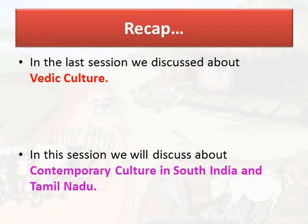Before going into details of today's session, let us have a recap of what we learned in the last one. In the last session we discussed about the Vedic culture. The phase of urbanization in India came to an end with the decline of the Indus civilization, and a new era called the Vedic Age began with the arrival of the Aryans. The Aryans were Indo-Aryan language-speaking semi-nomadic pastoralists who came from central Asia through the Khyber Pass of the Hindu Kush mountains. Cattle rearing was their main occupation, though they also practiced slash-and-burn agriculture. The Rig Vedic polity was kinship-based; kula was the basic unit of the polity.